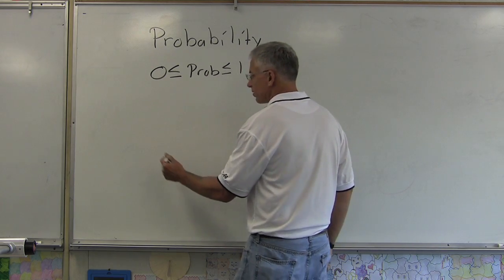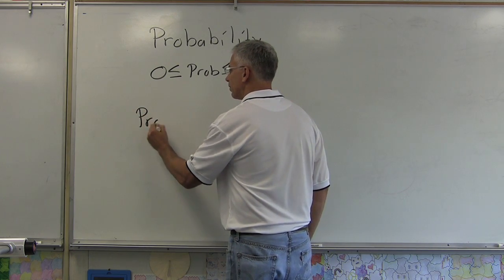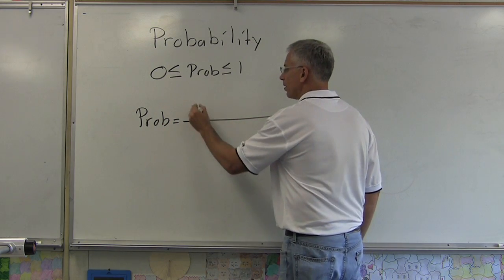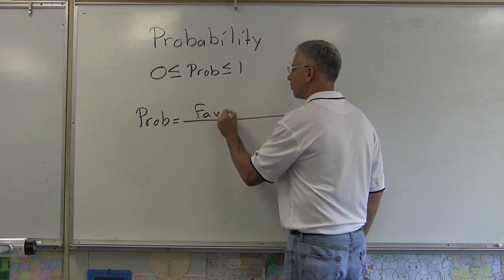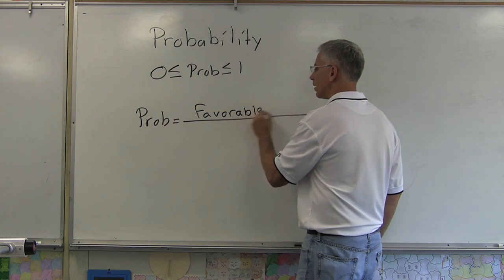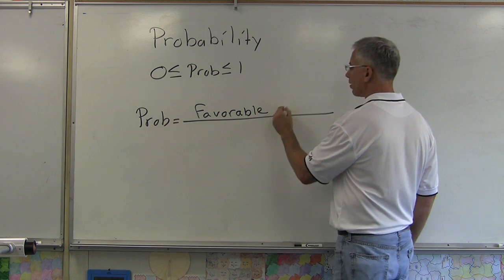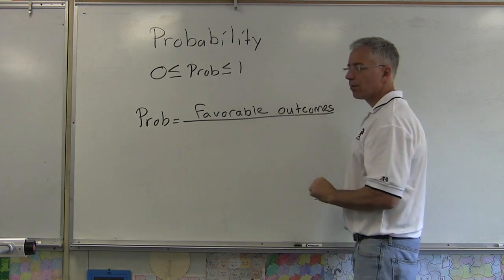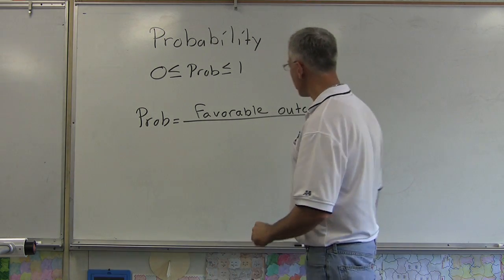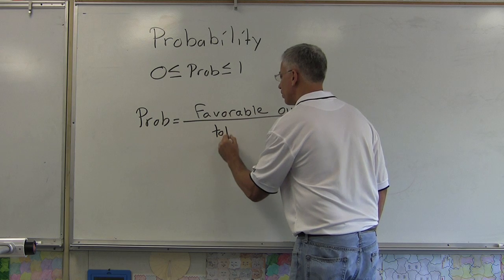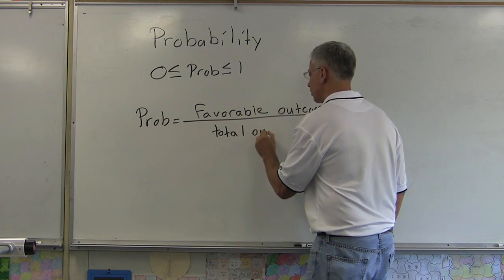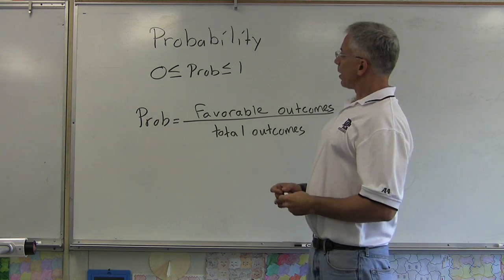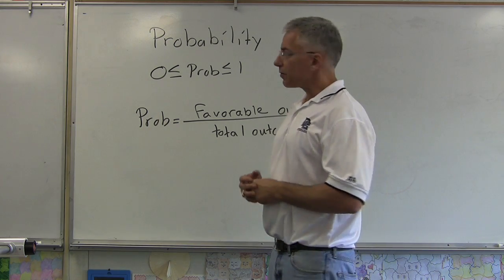Where you get your fraction is this: probability is equal to a fraction. The top number is the ones you're looking for — I call them your favorable outcomes. The bottom number is the total. And that's how you get your probability answers.